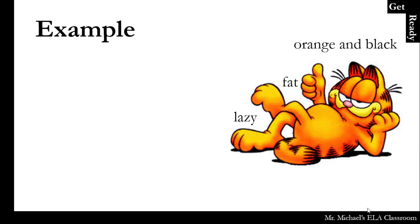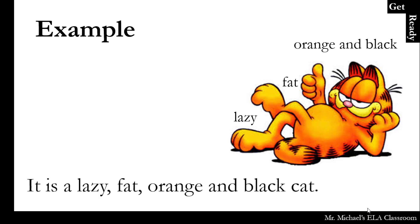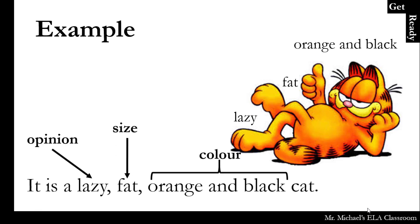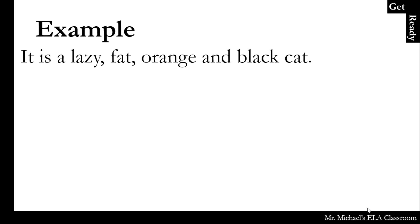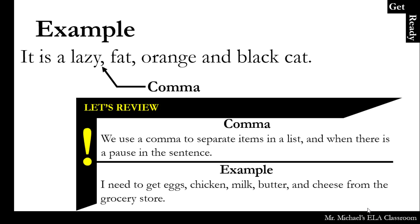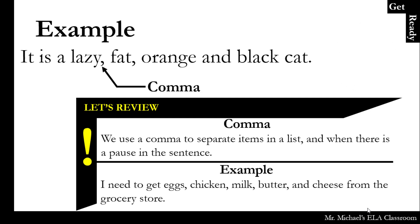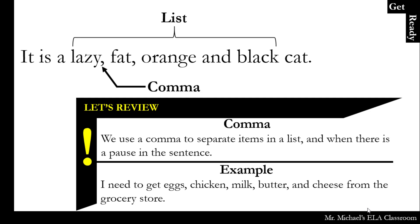Let's look at an example. It is a lazy, fat, orange, and black cat. Looking at our order of adjectives, we put the opinion first, then the size, and then the color last. We also see a comma here. We use a comma to separate items in a list and when there is a pause in the sentence. For example: I need to get eggs, chicken, milk, butter, and cheese from the grocery store. We have to separate our list with commas. In our cat sentence, the list is: lazy, fat, orange, and black — three items.